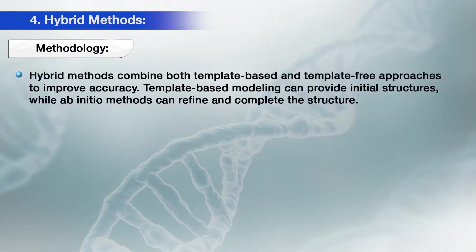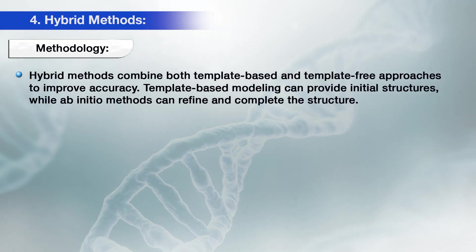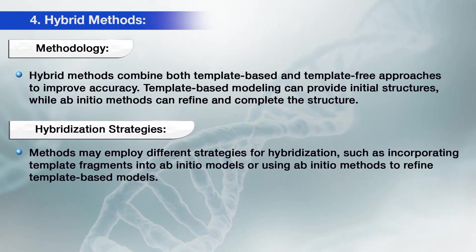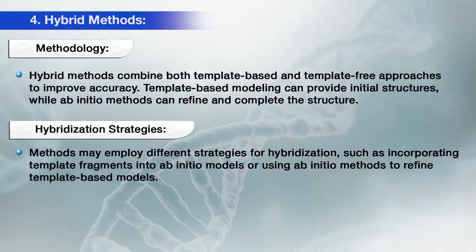A hybrid method may include homology, AB initio, and threading combined together. The hybrid method combines both template-based and template-free approaches to improve accuracy. Template-based modeling can provide initial structures, while AB initio methods can refine and complete the structure. Methods may employ different hybridization strategies, such as incorporating template fragments into an AB initio model or using AB initio methods to refine a template-based model.